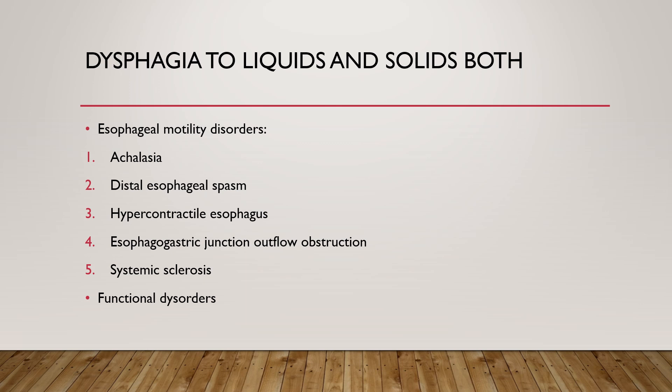Always remember: achalasia is a progressive disorder affecting both liquids and solids, whereas distal esophageal spasm and hypercontractile esophagus cause intermittent dysphagia to solids and liquids. Esophagogastric junction outflow obstruction is failure or incomplete opening of the EGJ leading to dysphagia. Systemic sclerosis presents with history of heartburn and dysphagia, with underlying motility abnormalities and can also lead to peptic stricture formation.